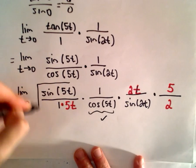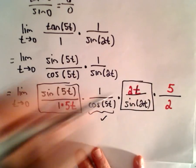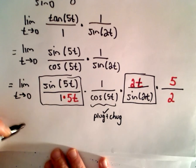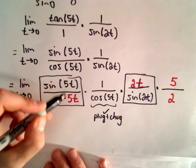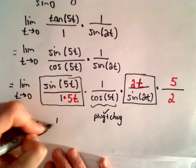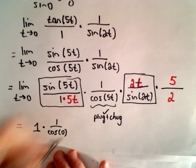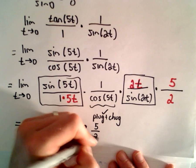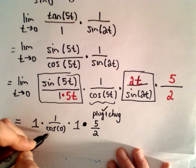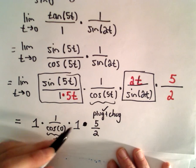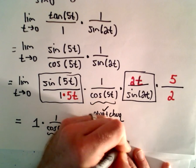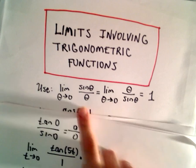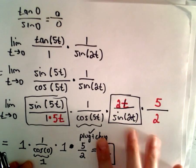Now we've got our results. We can use the limit result on sine of 5t over 5t — that's just 1. For the middle part, 1 over cosine of 5t, we just plug and chug: 1 over cosine of 0 equals 1. The next limit, sine of 2t over 2t, is also exactly equal to 1. And then we still have 5 halves left over as a constant. Since cosine of 0 equals 1, we have 1 times 1 times 1 times 5 halves, which gives us 5 halves as our solution. We're really just using those two limit results — it's just a matter of breaking things up and being careful with the algebra.